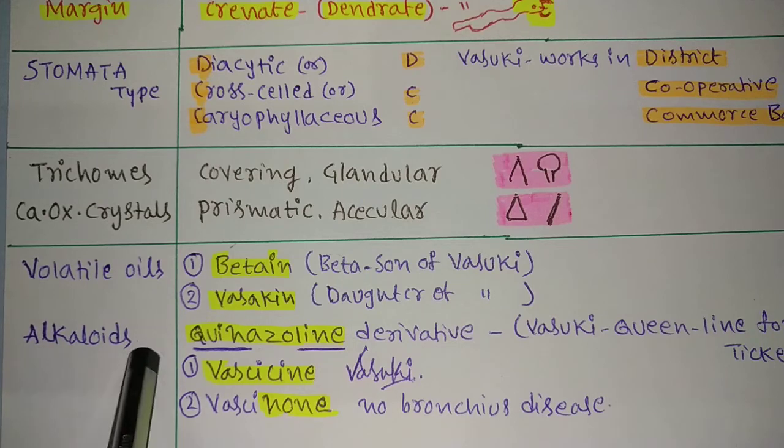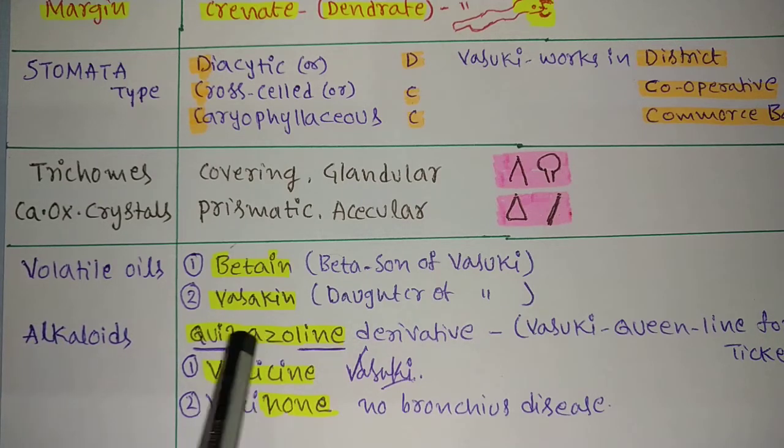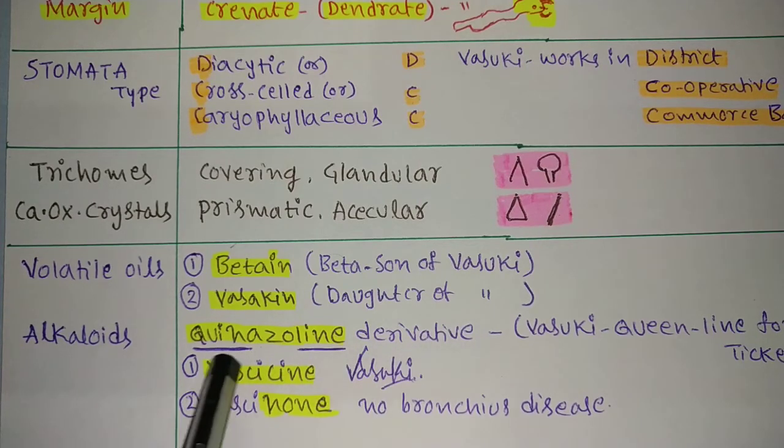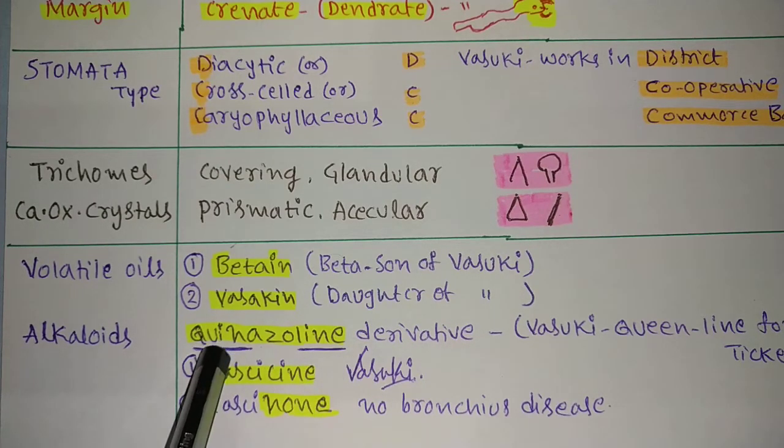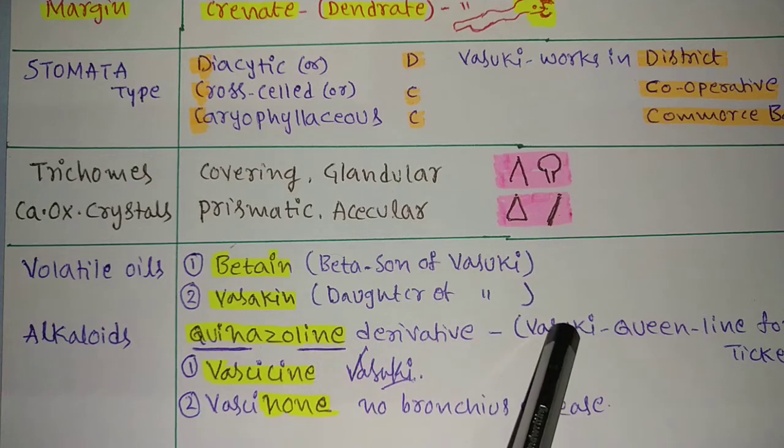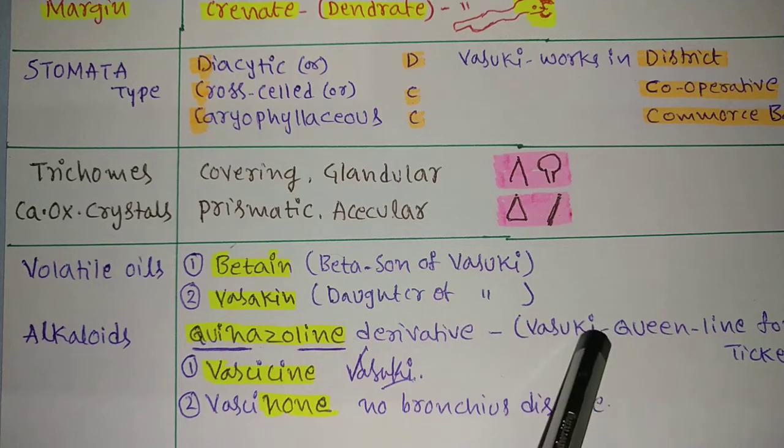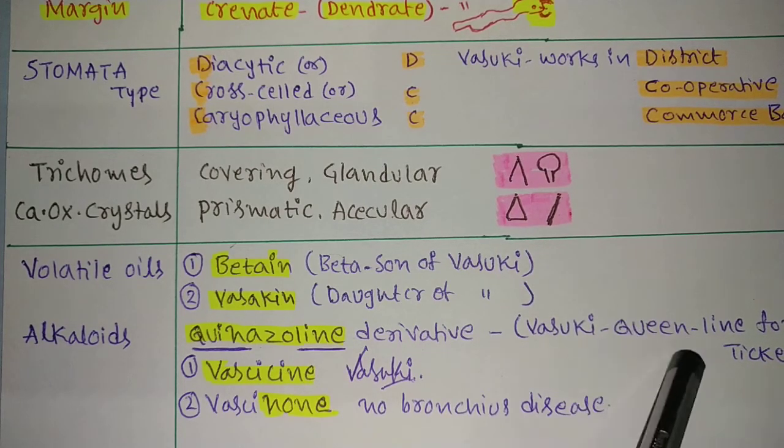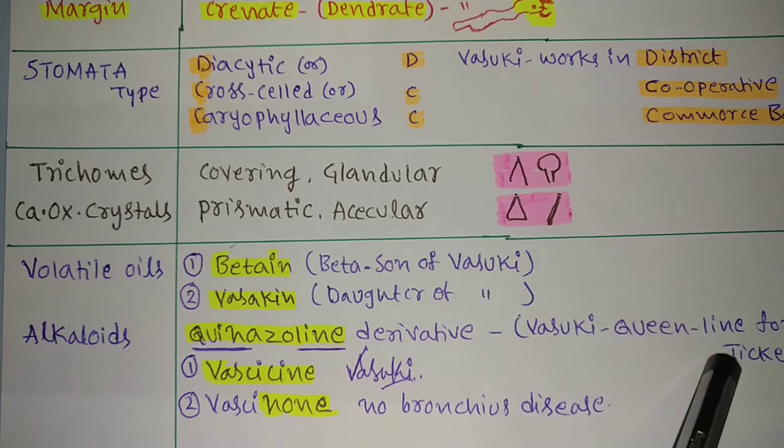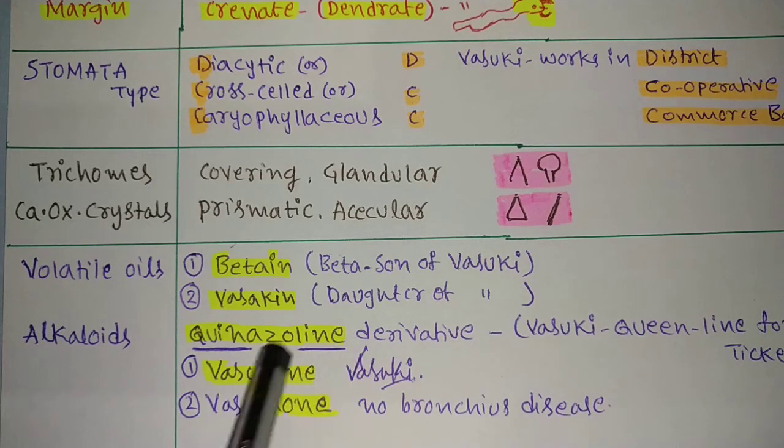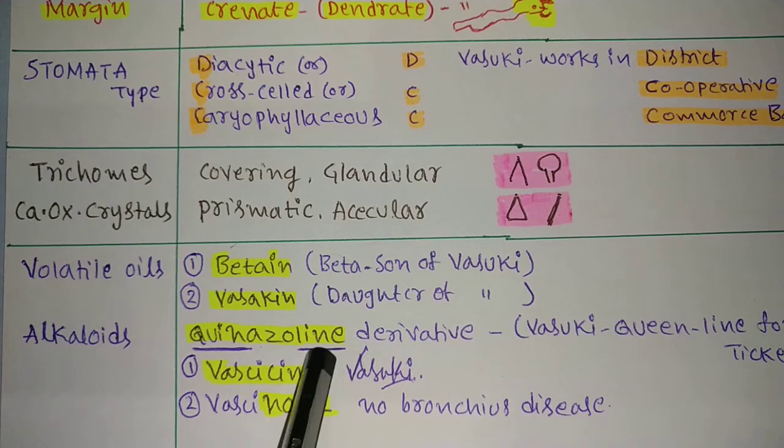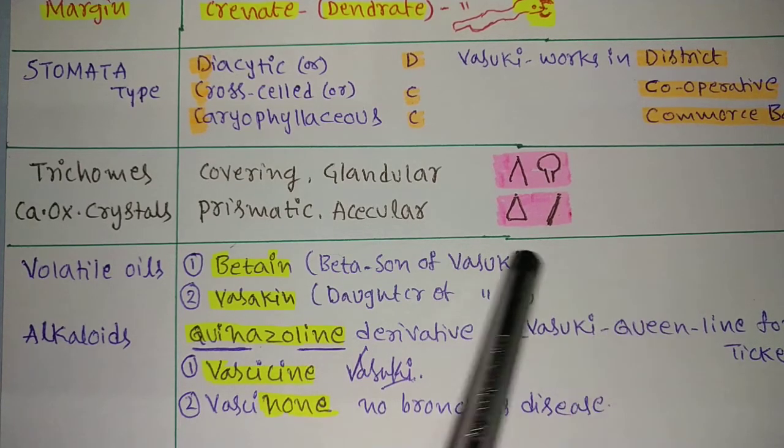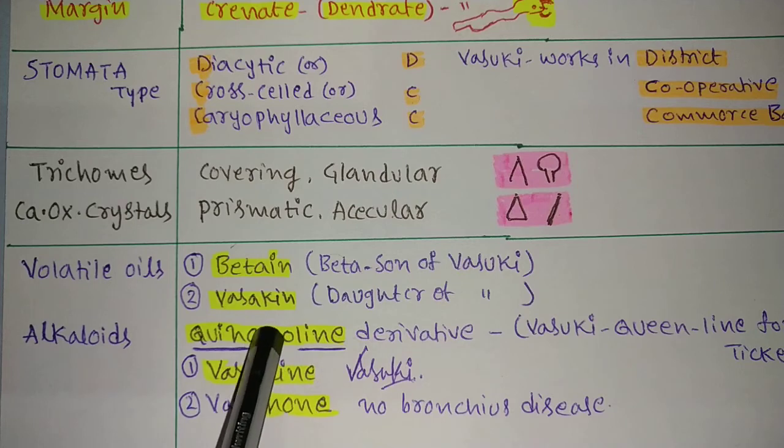Next, alkaloids. It also consists of alkaloids called quinazoline derivatives. Quinazoline derivatives - see here, queen line. Vasuki is a queen, Nayanthara is a queen. And the line for the tickets, there is a line - queen jo line for the tickets of the movie.